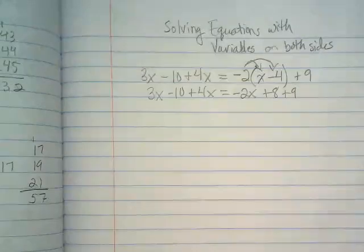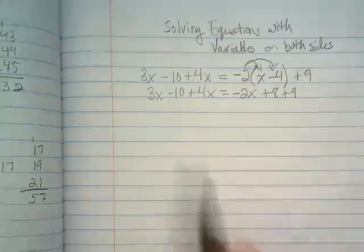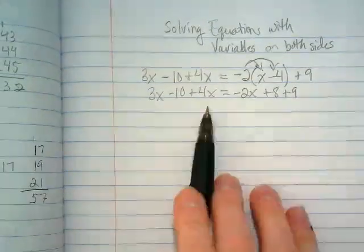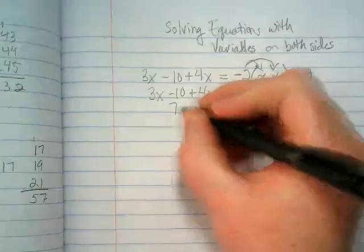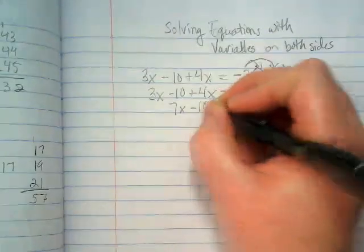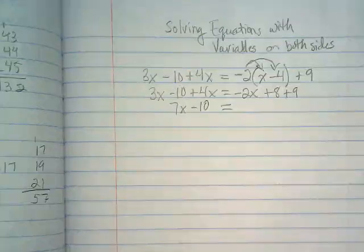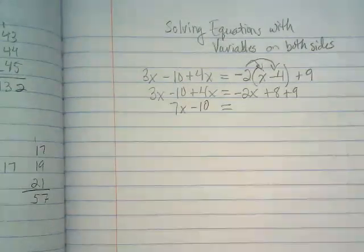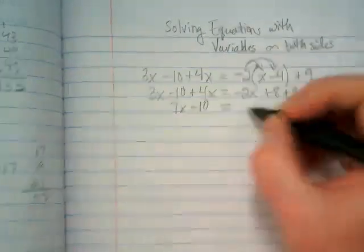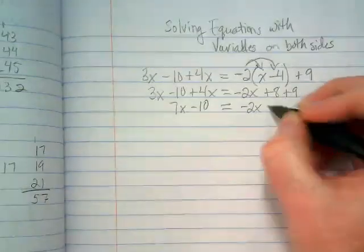What's our next step? Combining like terms. We have a 3x on the left and a 4x so that's going to become 7x and then the minus 10 stays. And what are we going to combine on the right side? So we get negative 2x plus 17.